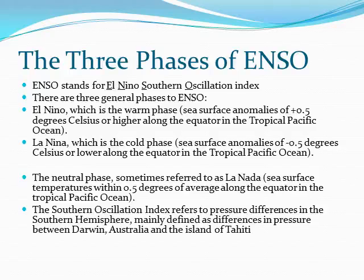ENSO stands for El Niño Southern Oscillation Index. There are three general phases to ENSO. El Niño, which is the warm phase, has sea surface temperature anomalies of positive 0.5 degrees Celsius or higher along the equator in the tropical Pacific Ocean.